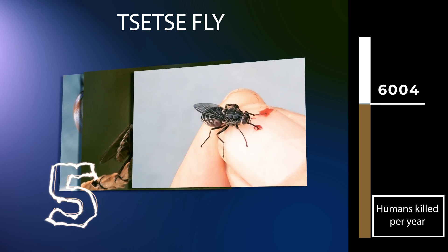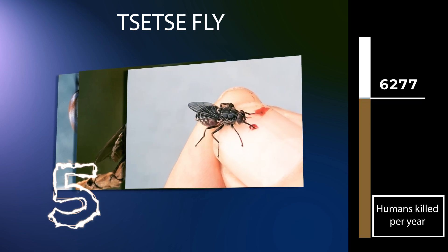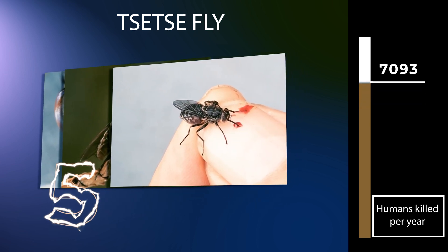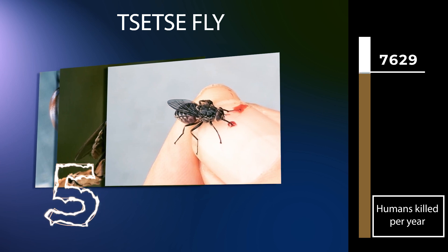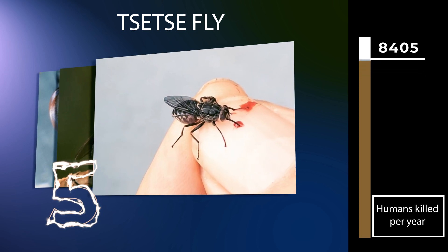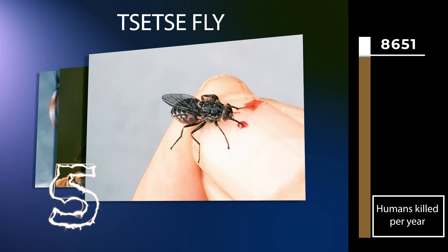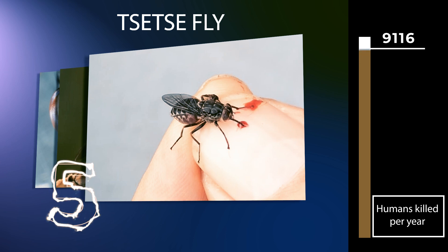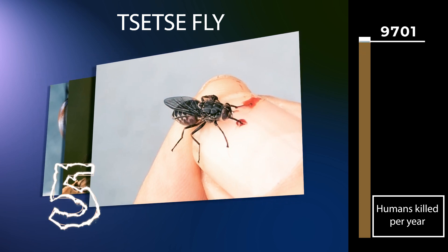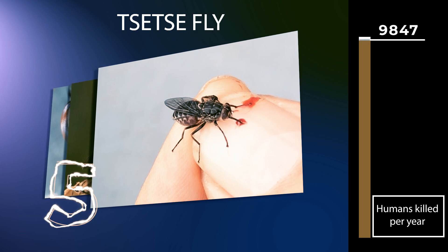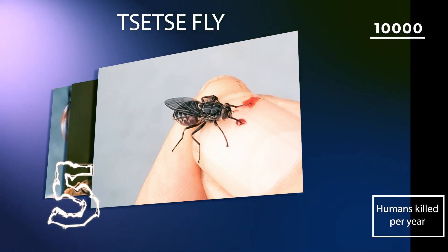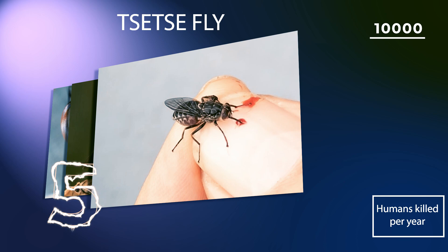Tsetse are biological vectors of trypanosomes, meaning that in the process of feeding, they acquire and then transmit small, single-celled trypanosomes from infected vertebrate hosts to uninfected animals. Some tsetse-transmitted trypanosome species cause trypanosomiasis, an infectious disease. In humans, tsetse-transmitted trypanosomiasis is called sleeping sickness.